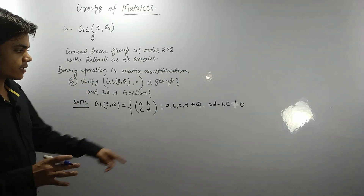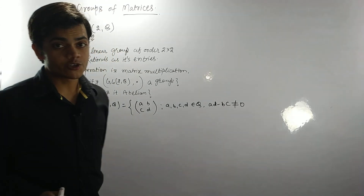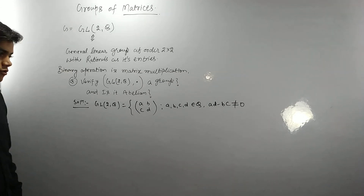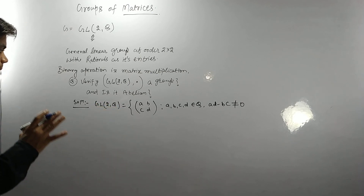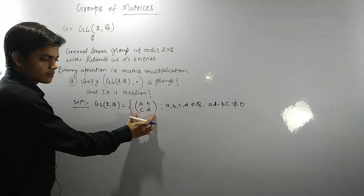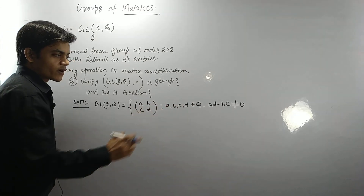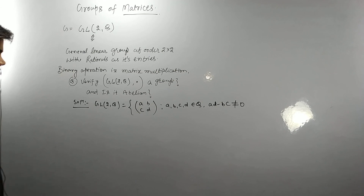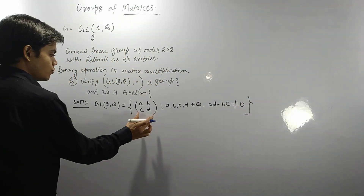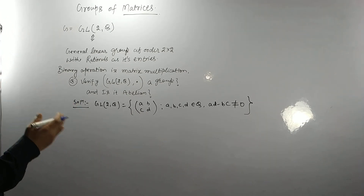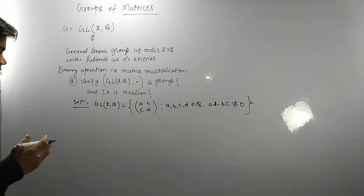The condition AD minus BC ≠ 0 is required because if it were zero, it would be impossible to find the inverse of the matrix. So GL(2,Q) is defined as the set of all two by two matrices whose entries are rational and whose determinant AD minus BC is not zero.